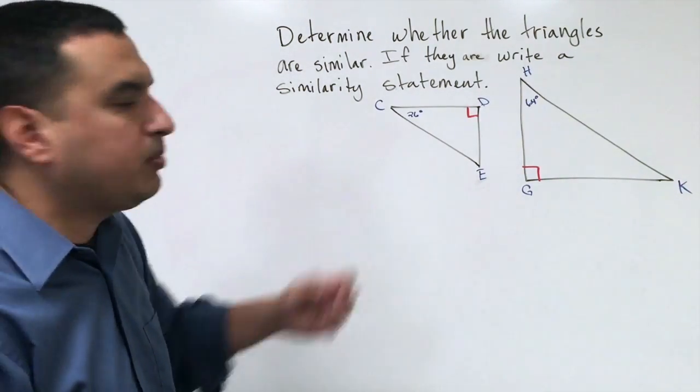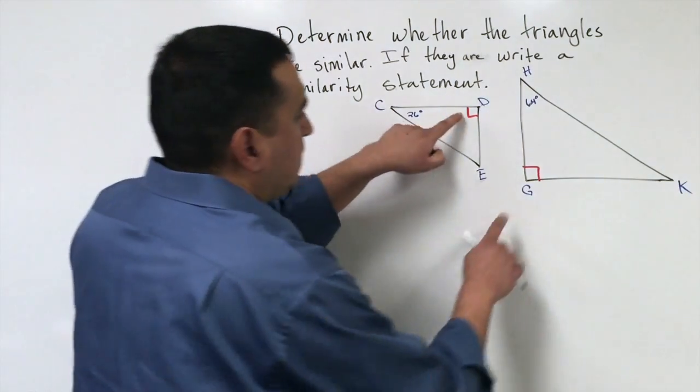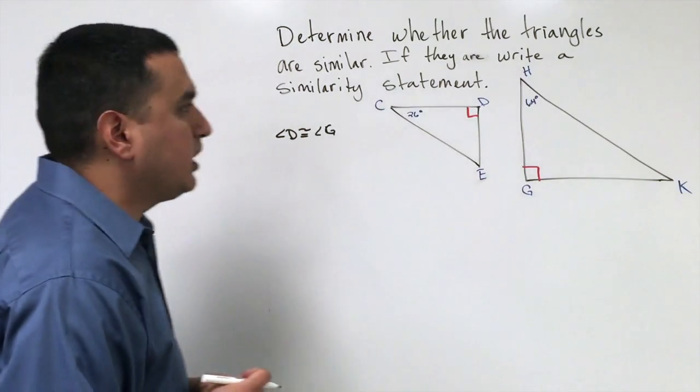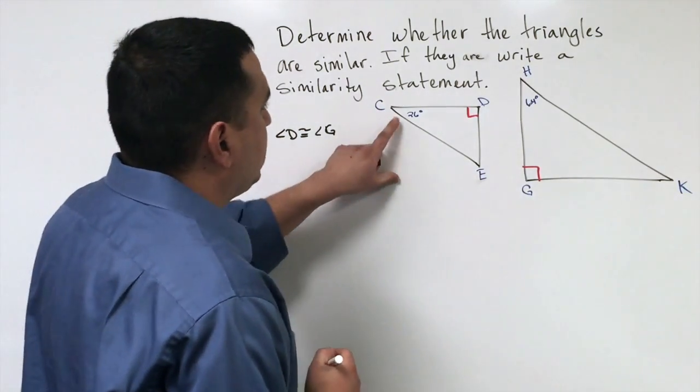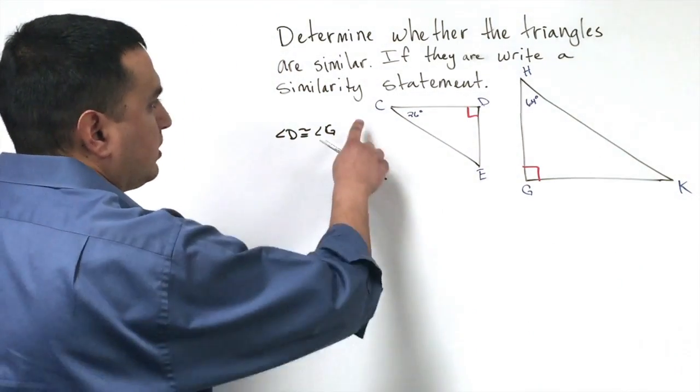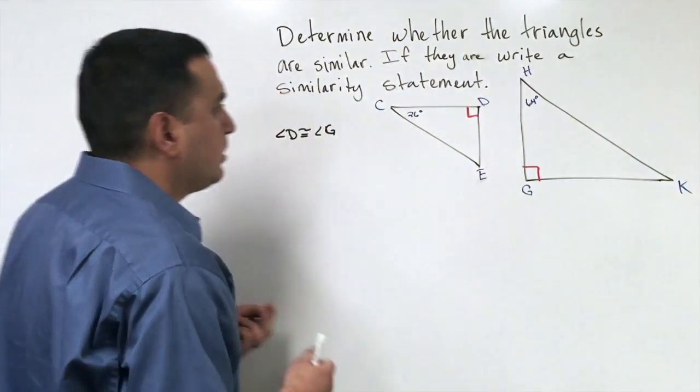So in this particular example, angle D and angle G are congruent based off of the diagram, the information from the diagram. Now, this angle is 26, which is obviously not equal to 64.